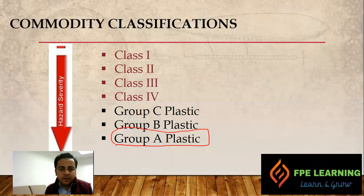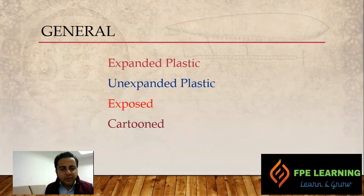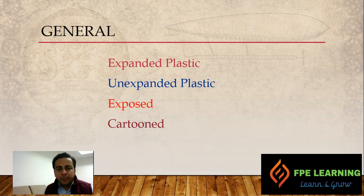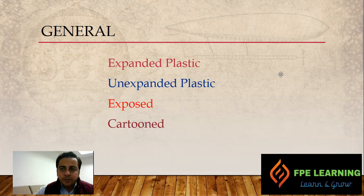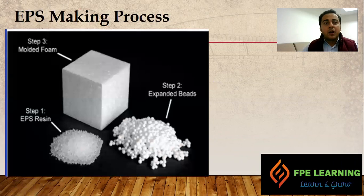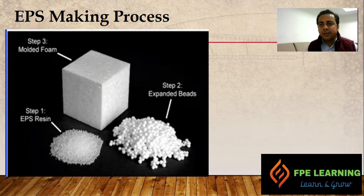This week we are going to talk about Group A plastics. There are four parameters — which you can see on the screen — that are going to influence the design of Group A plastic storage. Those four are: whether it is expanded or unexpanded plastic, and whether it is exposed or cartooned. These four factors are going to influence the design of your sprinkler system.